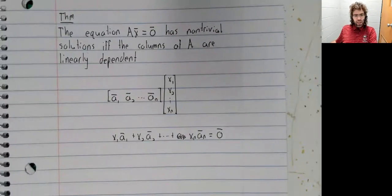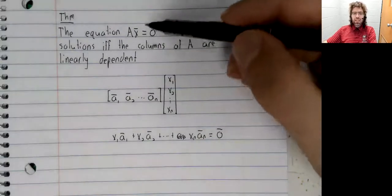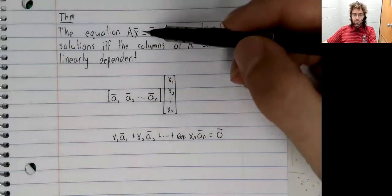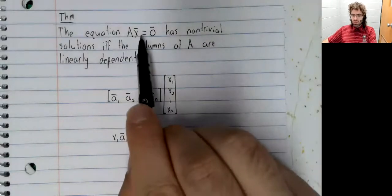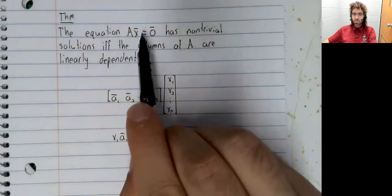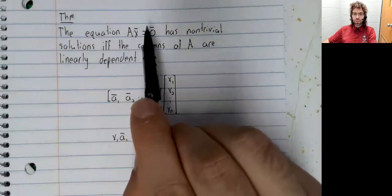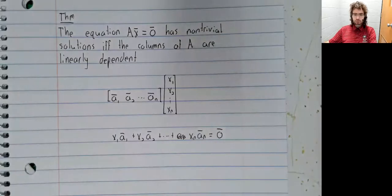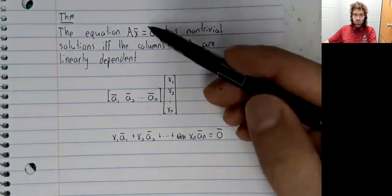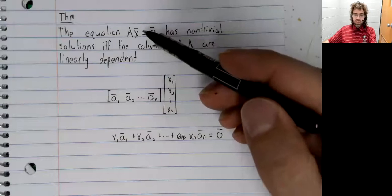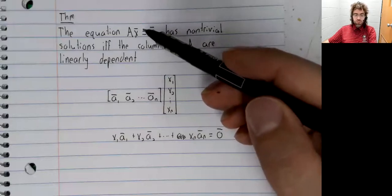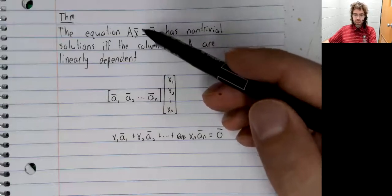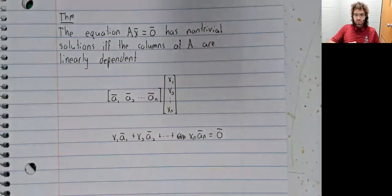I should emphasize though, we don't need a theorem to tell us whether Ax equals zero has non-trivial solutions. If that's all we're interested in, we can just use Gauss-Jordan elimination to solve this equation. So it's an interesting theorem.